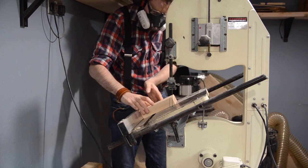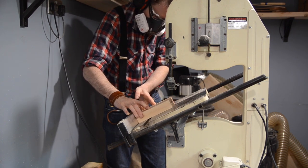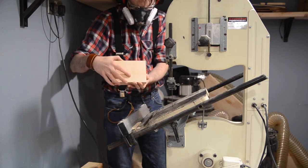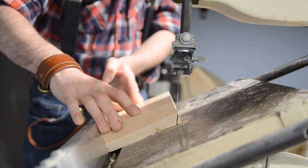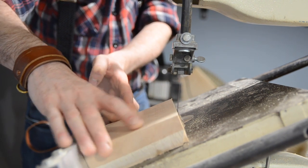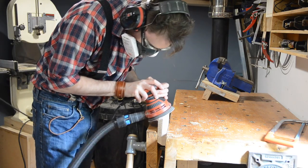Then I want to put a bevel on the edges. So I set the bandsaw to 25 degrees. I can then get the piece run through on all four sides cutting a 25 degree bevel at the bottom. I use the random orbital sander to give the cut a good clean up.